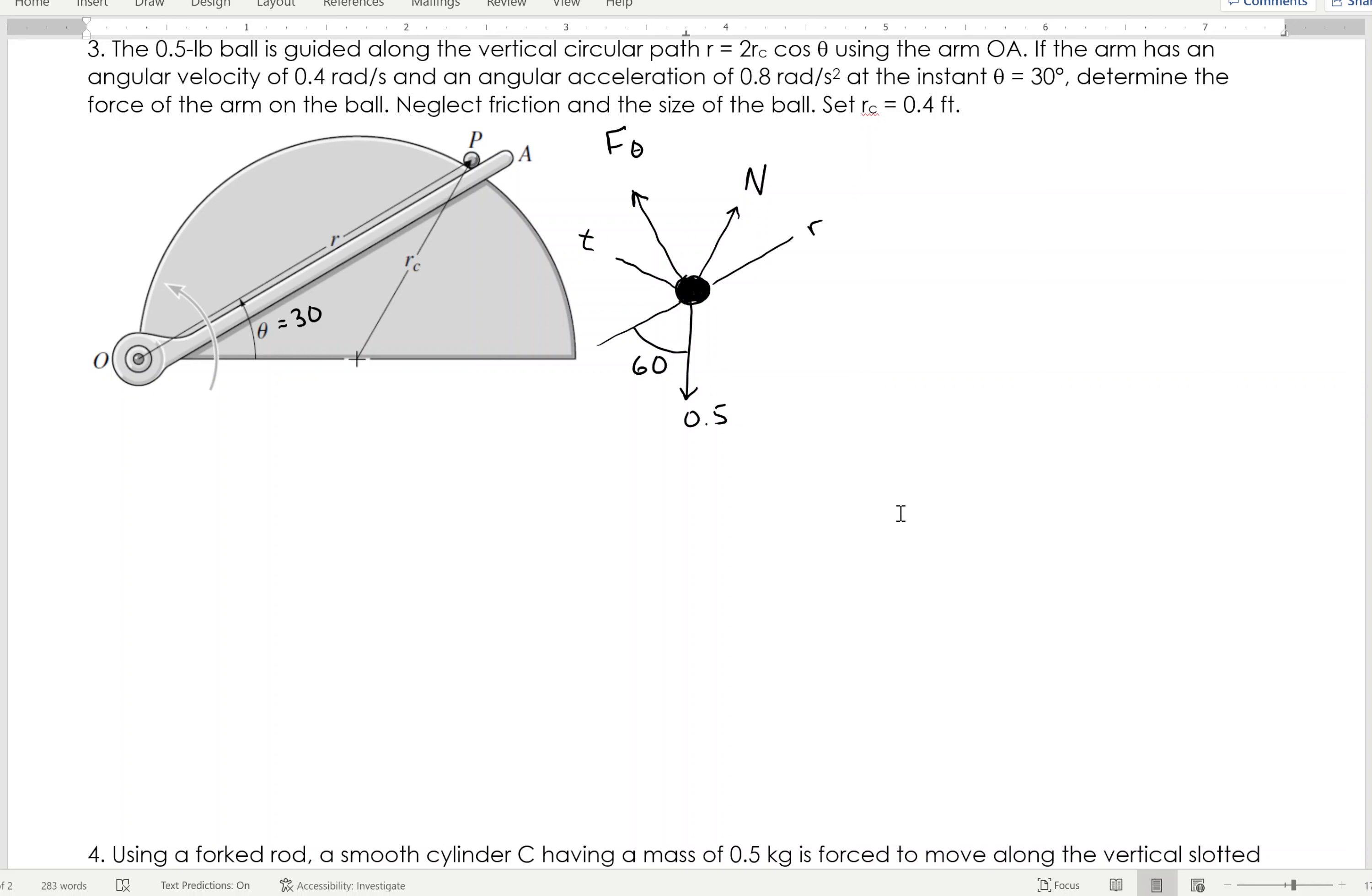I'm going to walk through exactly what you're looking at here, but what I have is a five pound ball going along a path given in polar coordinates here, so that gives you a hint of what we're looking at.